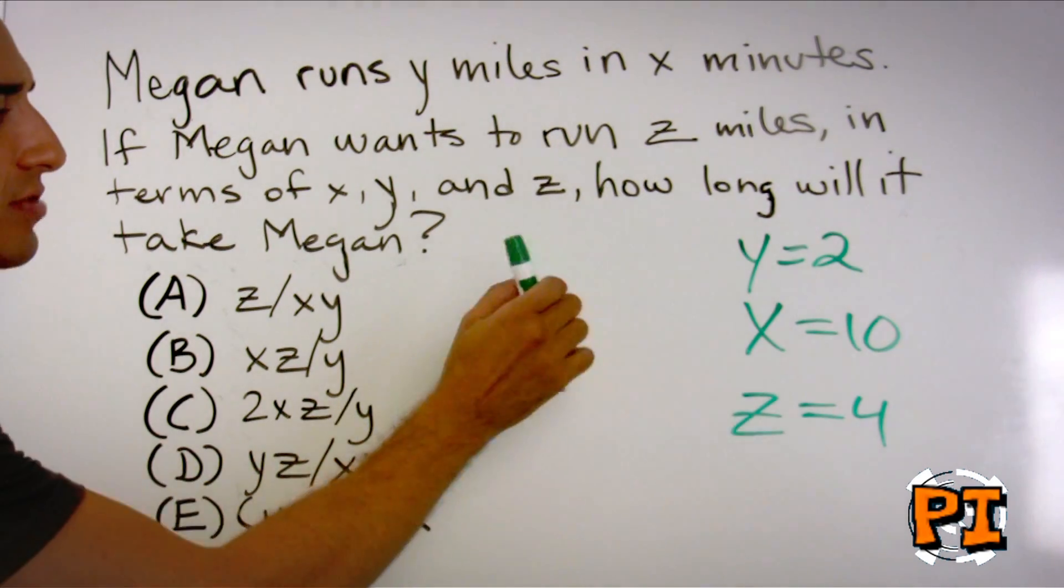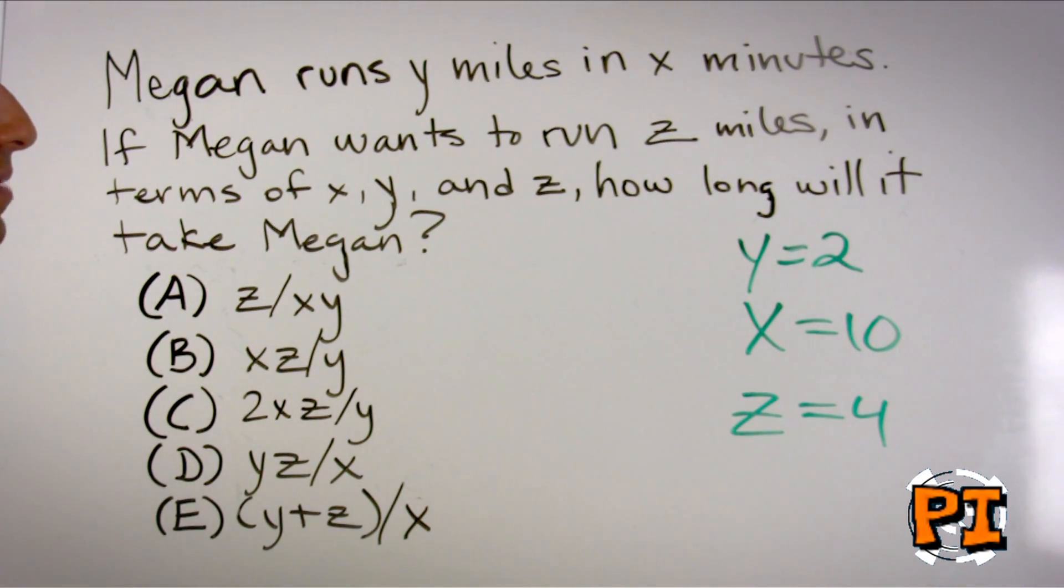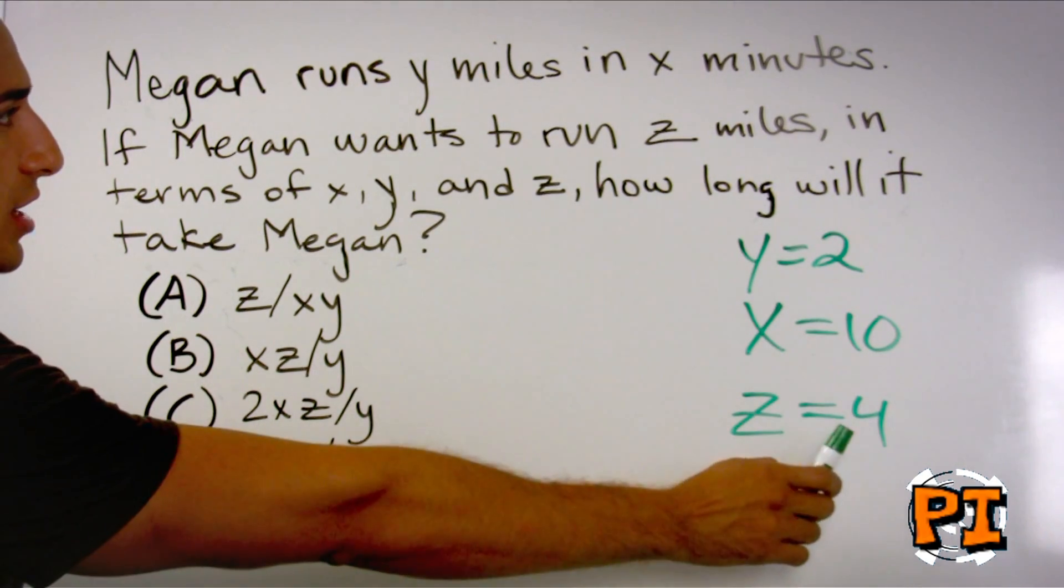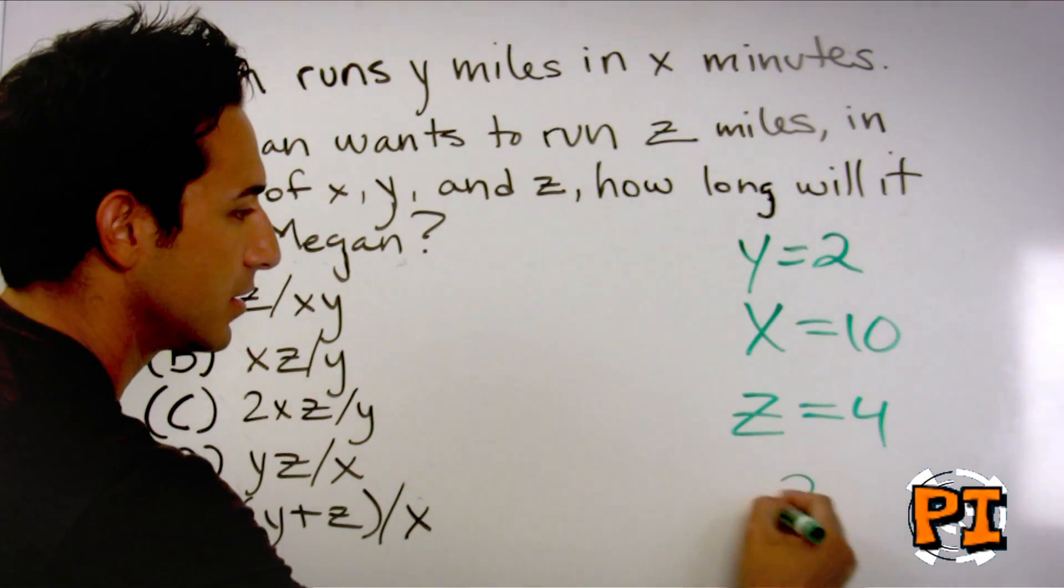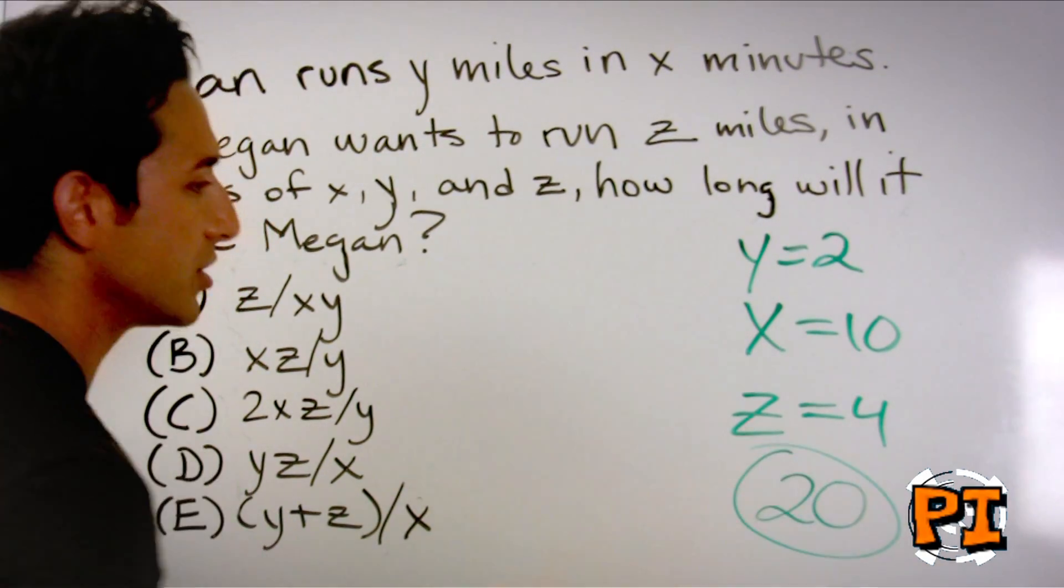Now I could have come up with 300, 500. I could have come up with much more complicated numbers, but this puts it in terms of numbers that we understand. She's running twice the distance. It's going to take her twice as long. How long is it going to take Megan? It's going to take Megan 20 minutes.